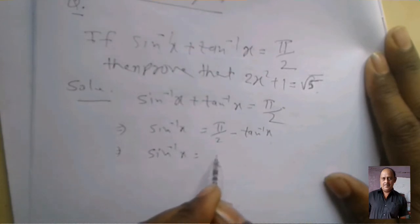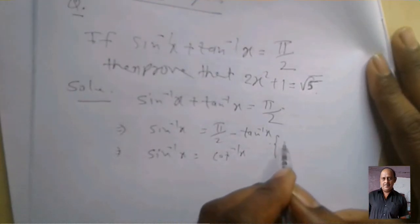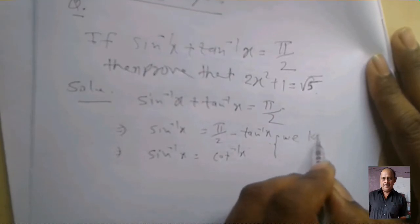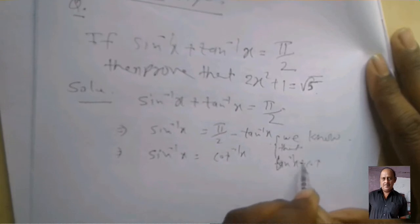Sin inverse x equal π/2 minus tan inverse x is equal to cot inverse x, because we know that tan inverse x plus cot inverse x equal π/2.